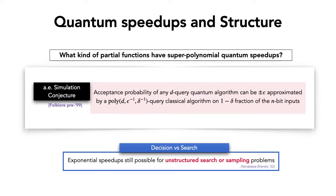In this context there is also a distinction between search and decision problems, which is unusual for classical algorithms. In a notable paper, Yamakama and Jandri showed that exponential speedups are still possible even for unstructured search or sampling problems. Since this is tangential, we won't go into detail; our focus is on proving the almost everywhere simulation conjecture for decision problems.